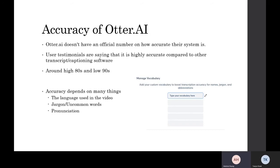In terms of accuracy of Otter AI, the company doesn't have an official number on how accurate their system is. However, through user testimonials and our own testing, we can conclude that it is pretty accurate compared to other transcribing softwares. Just a brief number — it's around the high 80s to low 90s. However, this is all just user testimonial.